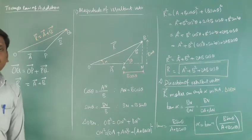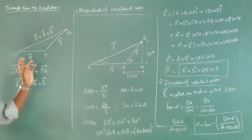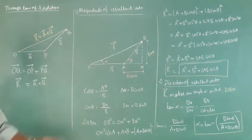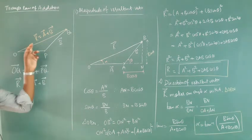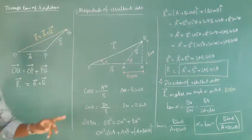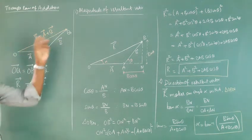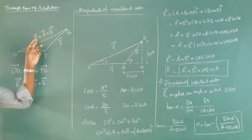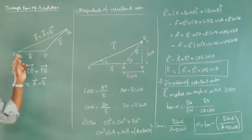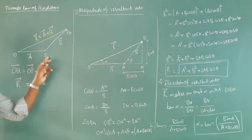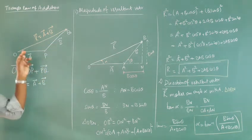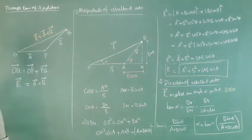Good morning students. Today we study the Triangle Law of Addition. If A vector and B vector are the two adjacent sides of a triangle, then the resultant vector is the closing side of the triangle in reverse order, or the third side. So the addition of A vector and B vector gives the resultant vector R equal to A plus B. Here OB is A vector and BQ is B vector, and A and B have some angle between them.